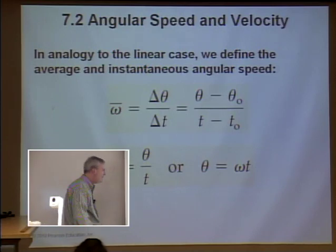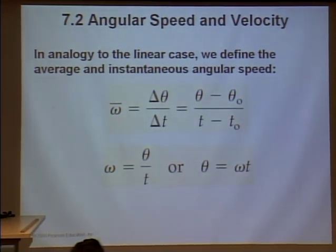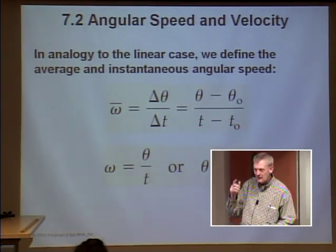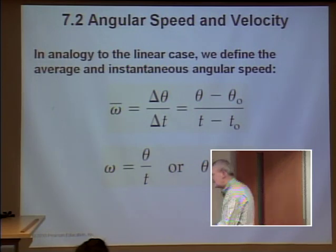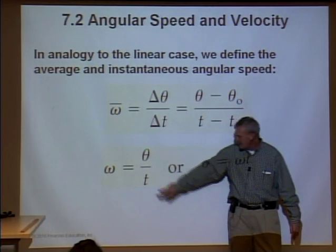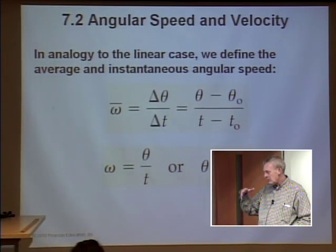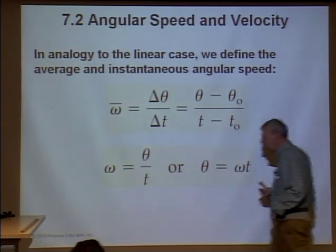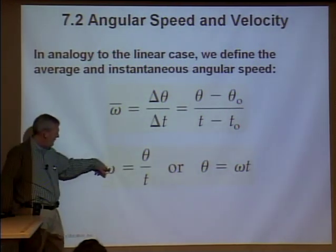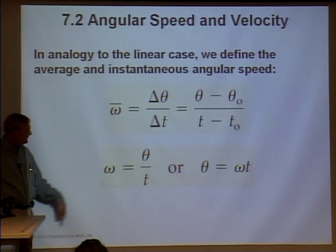Here's what this chapter is all about: angular speed and velocity. Omega — the change in angle (theta final minus theta initial) divided by the change in time — is in radians per second. This is our angular speed. I'm not going to call it velocity because we'll talk about direction in a minute. It describes whether something is speeding up or slowing down, going clockwise or counterclockwise.